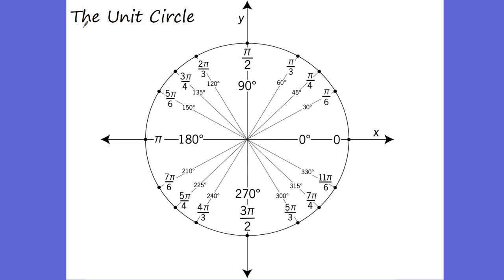The unit circle is a circle that shows everything from zero radians to two pi radians, or zero degrees to 360 degrees. Each one of these angles makes up a different triangle. I have a unit circle on mrradian.com — please print one out. I'm going to give you one in class. Always have the unit circle with you; it's really going to help out a lot.